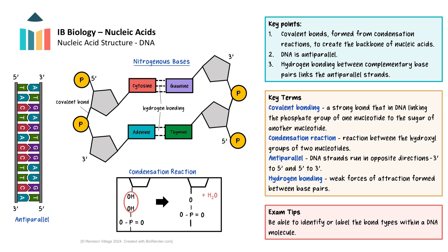The complementary base pairs are adenine with thymine, and cytosine with guanine. It's these bases and their sequence that form the genetic code. DNA nucleotides are joined together with covalent bonds, and they form through condensation reactions. This occurs between the hydroxyl groups of two nucleotides — one hydroxyl group is found on the phosphate group of one nucleotide, and the other is found on the deoxyribose sugar of another, specifically carbon 3 of the sugar. This creates a covalent bond between the phosphate group of one nucleotide and carbon 3 of the deoxyribose sugar of another, and note that water is lost. This creates a strong sugar-phosphate backbone, formed by covalent bonds, for the DNA molecule. You should be able to identify the hydrogen bonds formed between nucleotides and covalent bonds in the backbone.